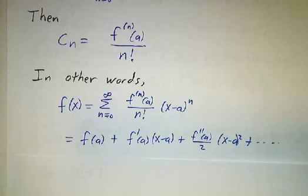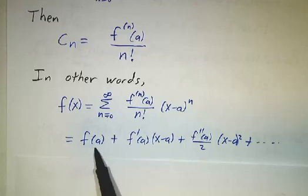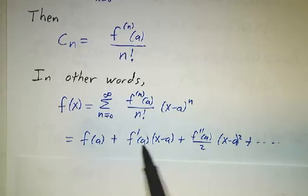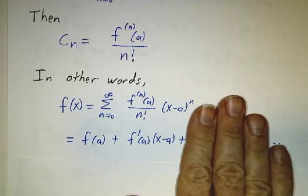It's convenient to look at the first few terms. The zeroth derivative is just the value of the function, so you always start off with f of a. Then you take the first derivative times x minus a. By the way, you might recognize that's the equation for the tangent line.